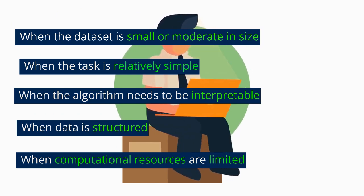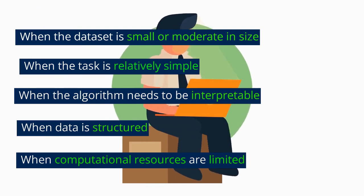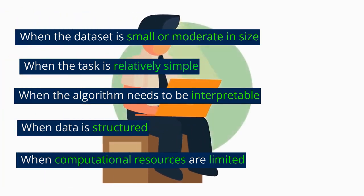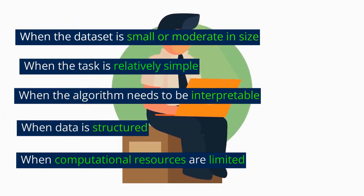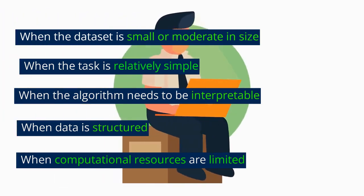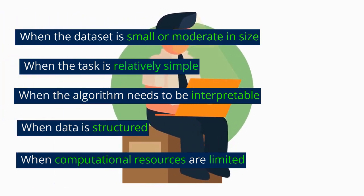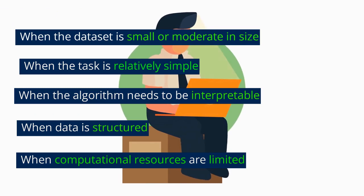When there is a need to interpret and explain the results, machine learning algorithms are a better choice. Explaining and interpreting deep learning algorithms can be difficult due to the complexity of the neural network models, which may make them less suitable for certain applications. Machine learning algorithms are well suited for structured data. And finally, when you have limited computational resources, machine learning is the more feasible choice, as deep learning requires specialized hardware such as GPUs, which may not be practical in some cases.